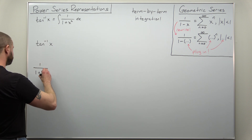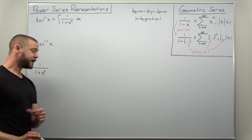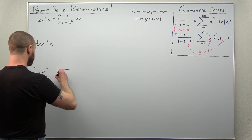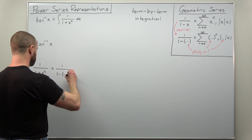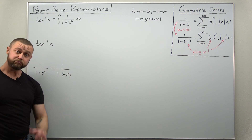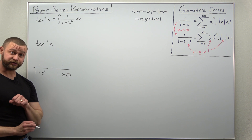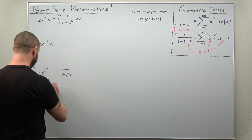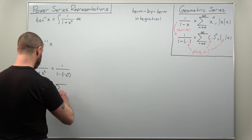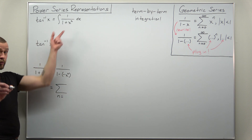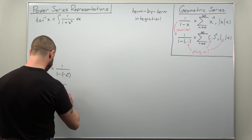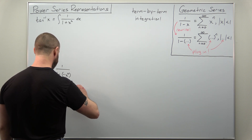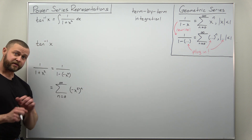Starting with 1 divided by 1 plus x squared, we want to rewrite the plus as minus a negative. So rewrite the denominator as 1 minus negative x squared. Now we can just make a replacement in the geometric series result — everywhere we make the replacement with negative x squared. So we get as our power series representation the sum from 0 to infinity, where the term is negative x squared to the nth power.